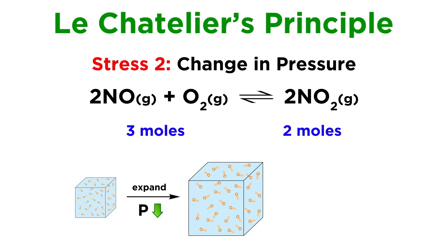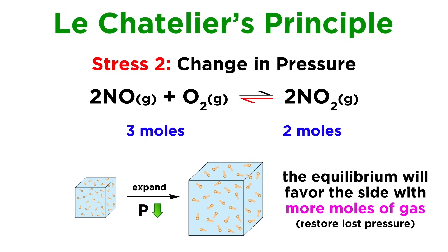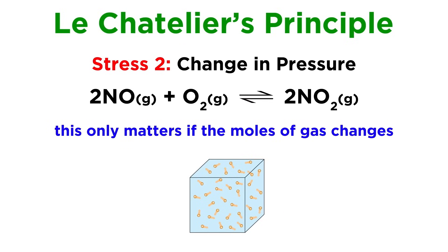On the other hand, if the vessel expands and the pressure drops, the equilibrium will favor the side with more gaseous particles in an attempt to regain some portion of the lost pressure. Once again, this only has an impact if the number of moles of gaseous reactant and the number of moles of gaseous product are not the same.